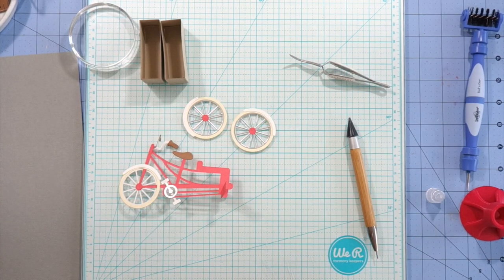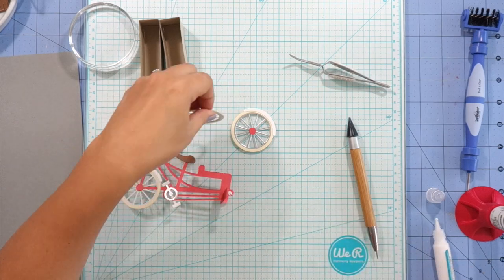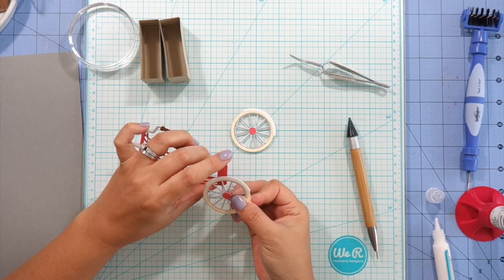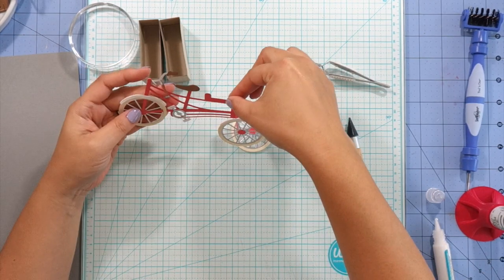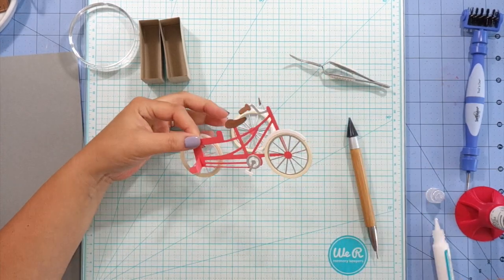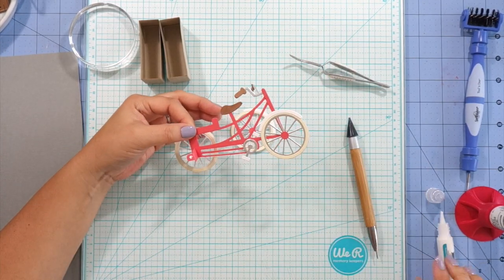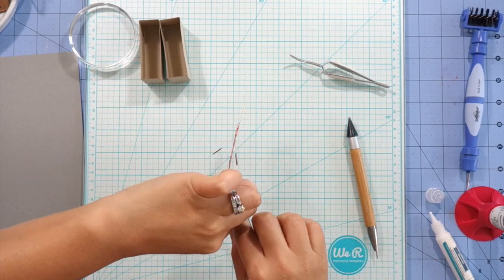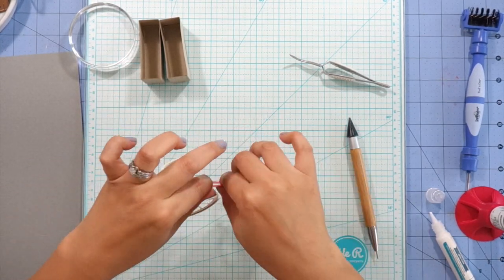So next I'm going to connect the little connector piece for the back tires and I'm just going to glue them on, trying to keep in mind that the fender needs to be on top. I'm going to glue on this side. Again, keeping in mind the fender on top.